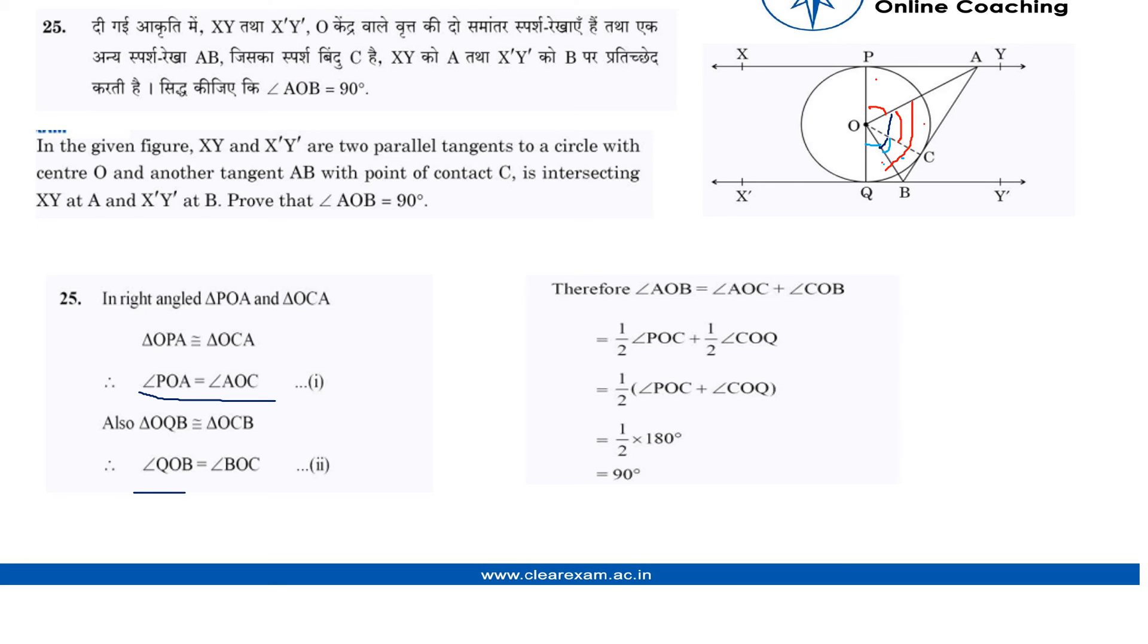As they both are equal, angle POC plus angle COQ make an angle of 180 degrees. So let's add them and we get 180 degrees, and dividing by 2 gives us 90 degrees, which equals what the question asked. So here we proved angle AOB is 90 degrees. Thank you.